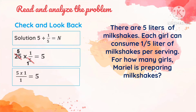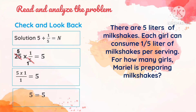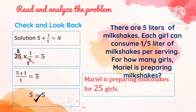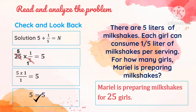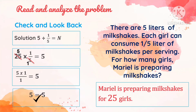Then we multiply the remaining numbers: 5 times 1 over 1. 5 times 1 is 5, over 1, is equal to 5. Therefore, 5 is equal to 5 — check! Our final answer is: Mariel is preparing milkshakes for 25 girls.